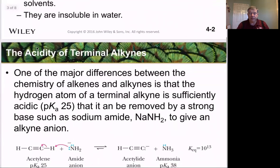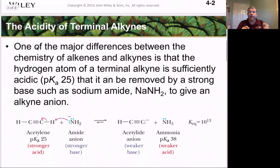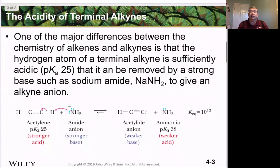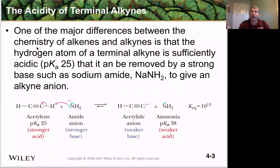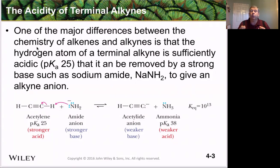One of the interesting differences between alkenes and alkynes is that because the carbon is sp2 hybridized, the hydrogen on alkynes tends to be more acidic than that of the alkenes or alkanes. When we look at Lewis acids and bases, the pKa of the hydrogen on ethane is about 51, but the pKa of the hydrogen on a terminal alkyne is about 25.